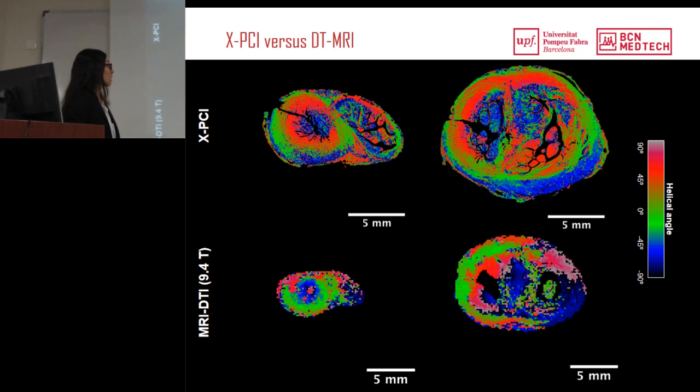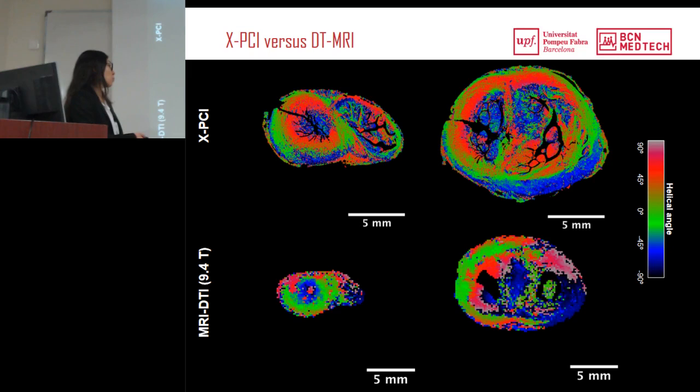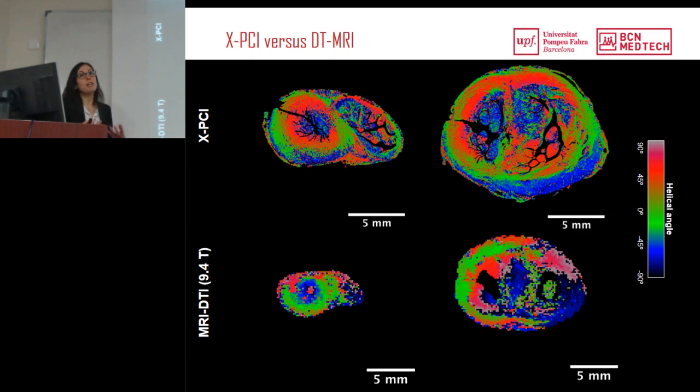For validation, we compared with diffusion tensor MRI of the same heart, even though MRI resolution is insufficient — only a few pixels per wall. Even so, the same areas of disorganization were distinguished in both synchrotron and MRI, and the right ventricle looks really disorganized in both. However, quantitative comparison was difficult because of the insufficient MRI resolution.